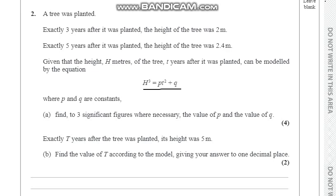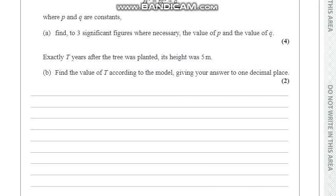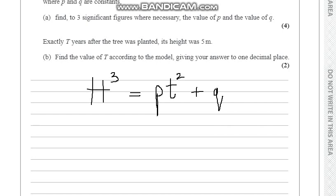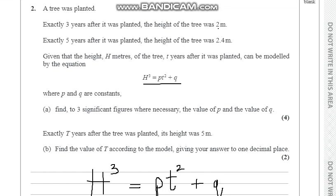First we will work on part A. I'll write the equation here so it doesn't get in the way. Now that I have written the equation, exactly 3 years after it was planted, the height of the tree was 2 meters. So we'll plug these values in the formula.